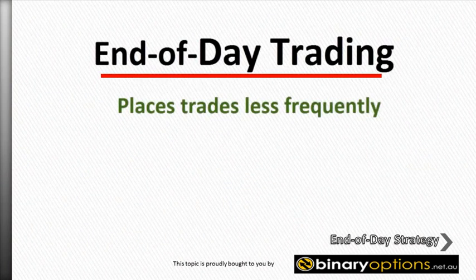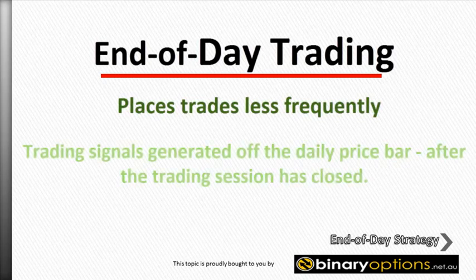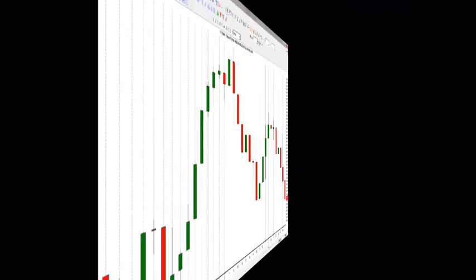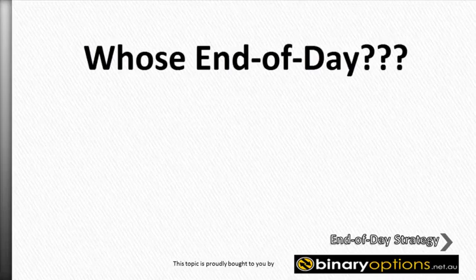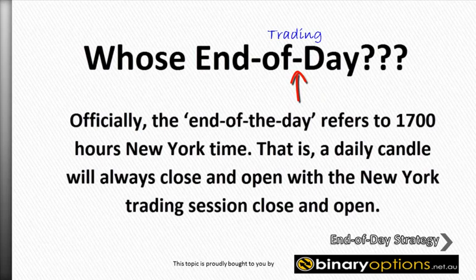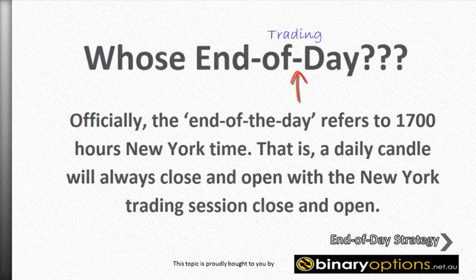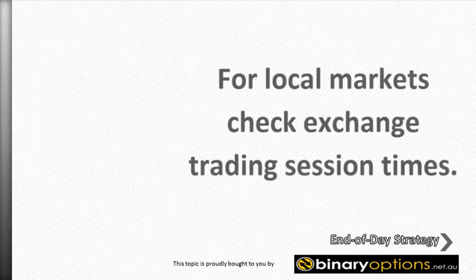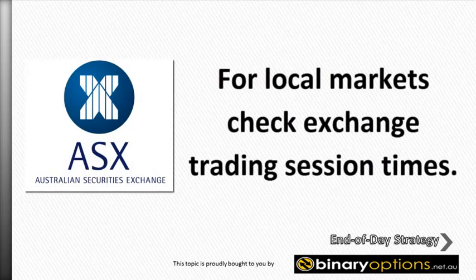Further, unlike intraday traders who use tick or minute data, end of day trading signals are generated off the daily price bar after the trading day has closed. So when we say end of day, whose end of day do we mean? Officially, the end of day refers to 1700 hours New York time. That is, a daily candle will always close and open with the New York trading session close and open. For local markets, however, the end of day candle will close and open in line with the local exchange trading session times.